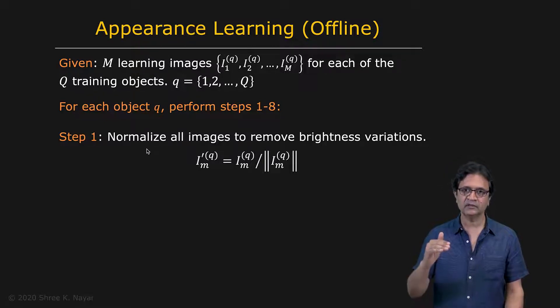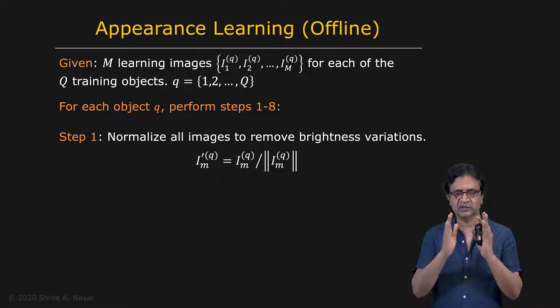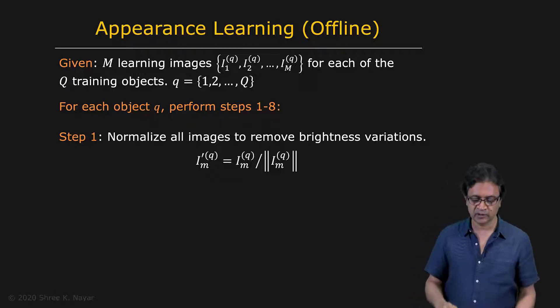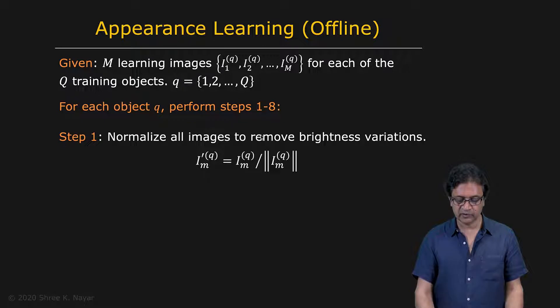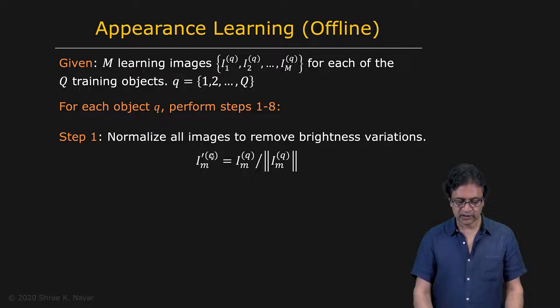First thing you do is you normalize all images so as to remove the brightness variations. I should mention that I'm taking for granted here that we have normalized the shape of all of these objects. We made it fit into this canonical shape or bounding box we talked about earlier. But after that, you're going to normalize all the images to remove brightness variations. So that's the image divided by the magnitude of the image. This is to make sure that we are not sensitive to changes in lighting during the learning stage versus the recognition stage or maybe even camera gain or exposure.